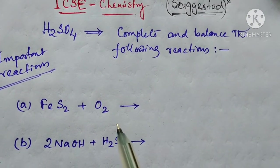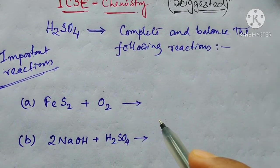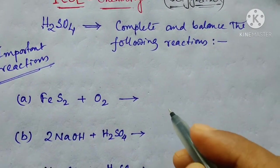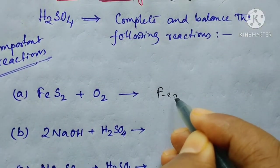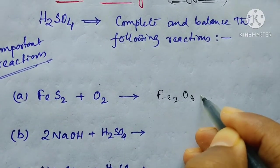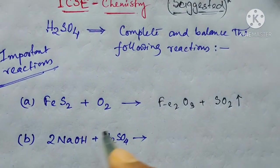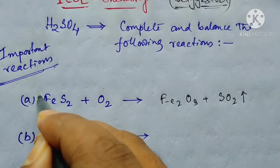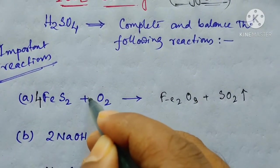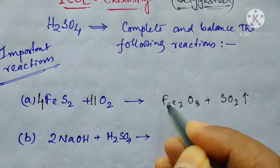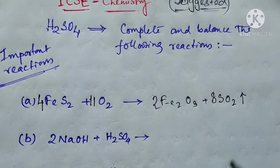The first reaction given is FeS₂ plus oxygen, which produces Fe₂O₃ and sulfur dioxide as gas. So if you balance it, you have to complete the balancing — without balancing, you are not going to get any marks for it. After balancing, you will get the balanced reaction like this.